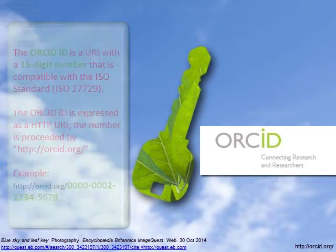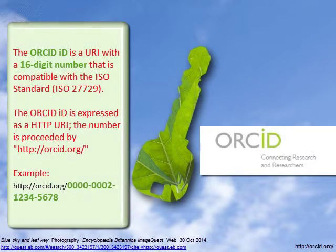The ORCID ID is a URI with a 16-digit number. It is expressed as a HTTP URI.